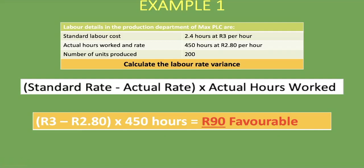Possible explanations for the favorable variance include the wage rate per hour falling, or lower-skilled workers being hired at a reduced rate. It's important to investigate the reasons for a favorable variance so you can replicate the outcome in future, where possible.